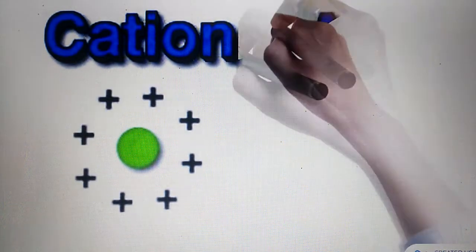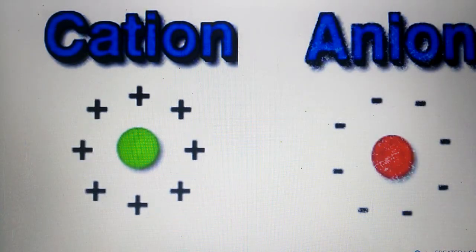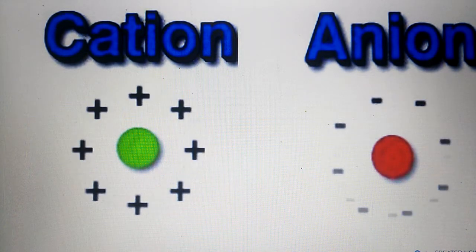When an atom gains an electron, a negative charge comes on the atom, then it is said to be an anion.